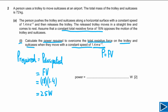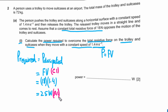This question has two marks. The first mark is a C mark for writing the formula P = Fv, and the second mark is the answer mark for getting the correct answer.